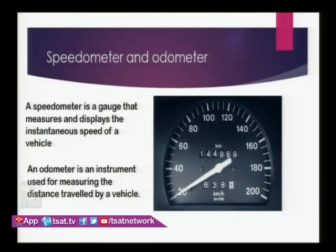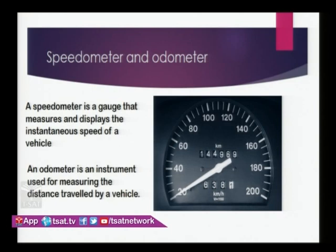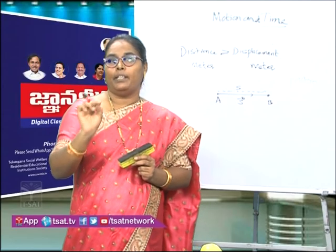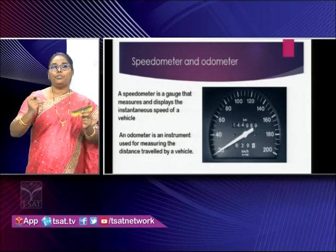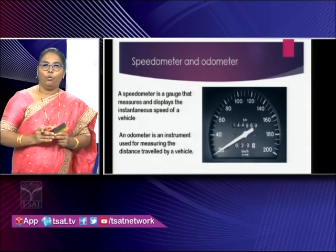In front of vehicles, we see a speedometer is fixed. In every vehicle you can see this speedometer. A speedometer is a gauge that measures and displays the instantaneous speed of the vehicle — the speed of the vehicle at a particular point of time. When we raise or lower the accelerator, the speed changes. Next, the odometer — the digital reading at the center — is a device used to record the distance covered by that vehicle.